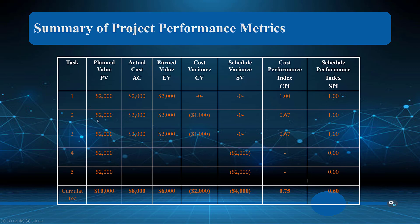As we look further, the problem becomes apparent at task two. If we add up tasks one and two we'd be at four thousand planned versus five thousand actual — still negative one thousand. Task two is where that variance originates, with an SPI of 0.67. Tasks three, four, and five show the same pattern — we used six thousand earned value and ten thousand planned value to derive these figures.